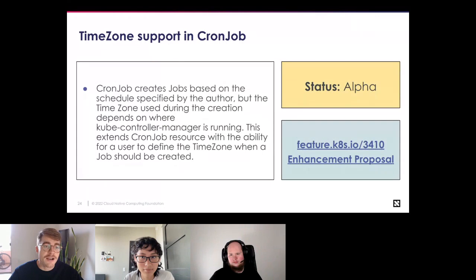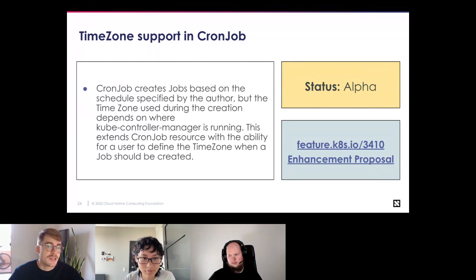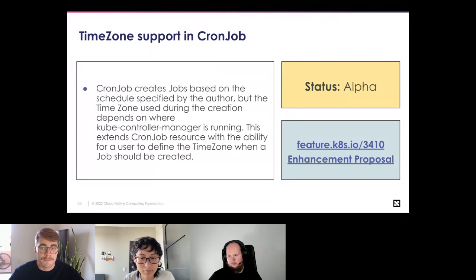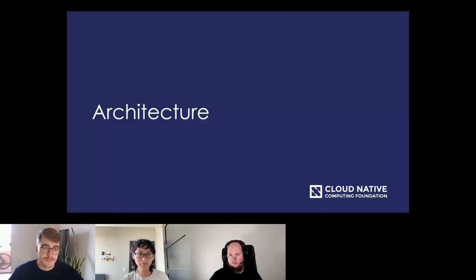Time zone support in CronJob: this creates jobs based on the schedule specified by the author, and the time zone used is dependent on where kube-controller-manager is running. This extends the CronJob resource with the ability for users to define the time zone when a job should be created.